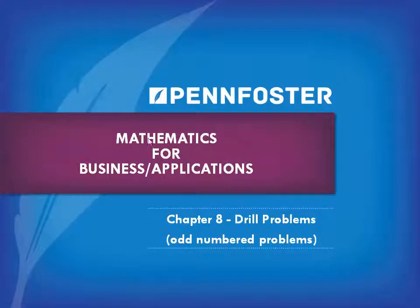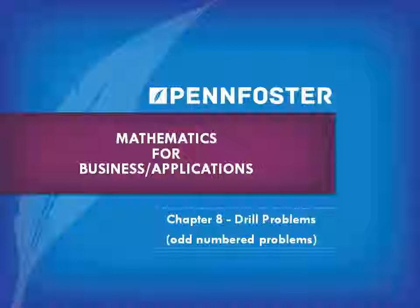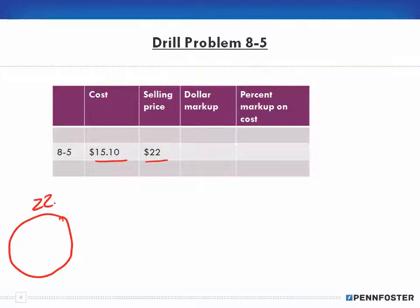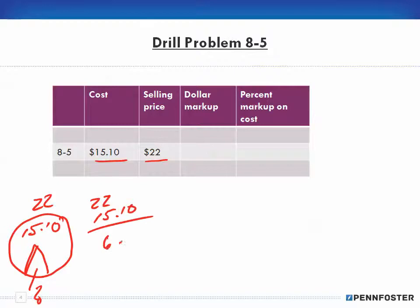Welcome back, students taking Math for Business and Finance and Math Applications. We're doing the Chapter 8 drill problems, the odd-numbered problems. We have a cost of $15.10 and a selling price of $22. We want to know the dollar markup and the percent markup on cost. The dollar markup is simply $22 minus $15.10, which gives us $6.90.